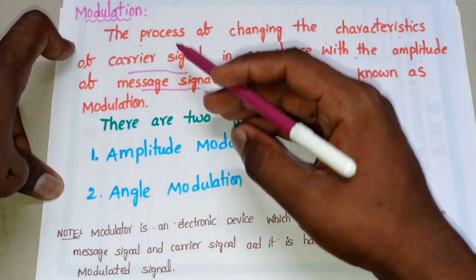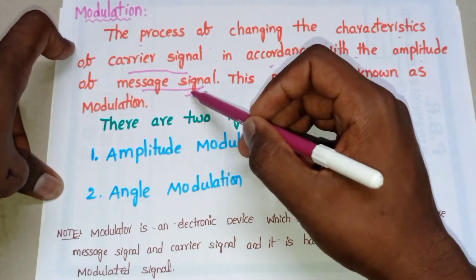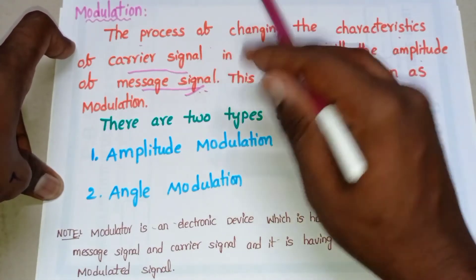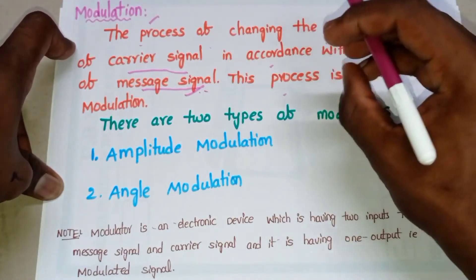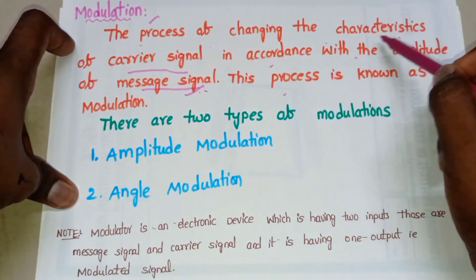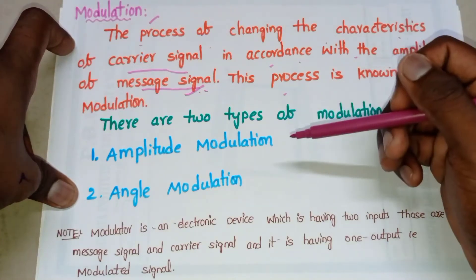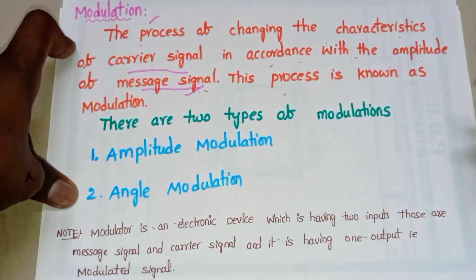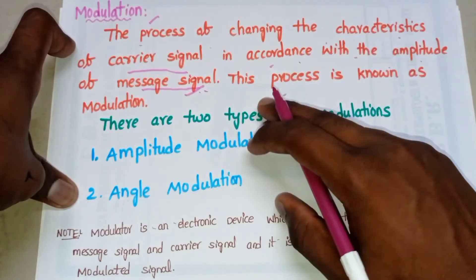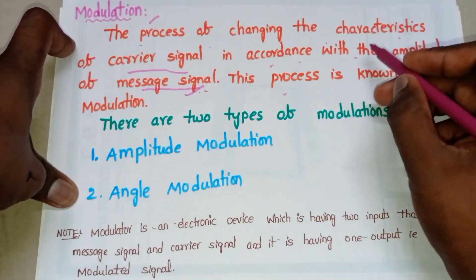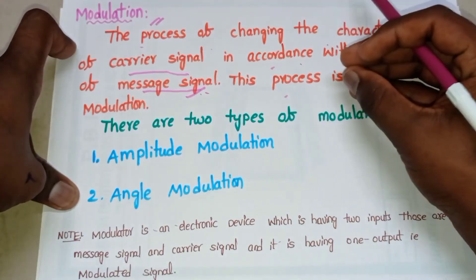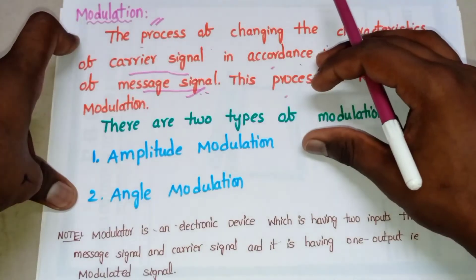In modulation we have two types of signals: the carrier signal and the message signal. The message signal is the signal having information to transmit; the carrier signal helps carry this message signal. The modulation technique superimposes the message signal onto a high frequency carrier signal — the characteristics of the carrier signal change in accordance with the amplitude of the message signal. If the amplitude of the message signal is increasing, the characteristics such as frequency, amplitude, or phase also increase, and if the message amplitude decreases, the characteristics also decrease.